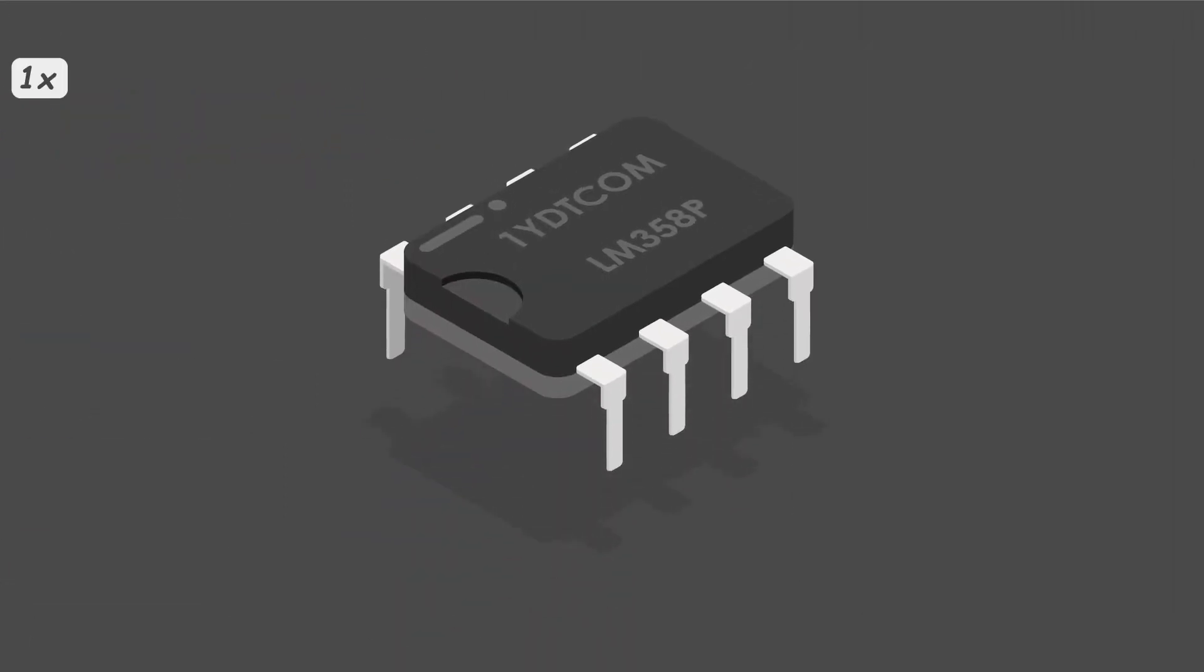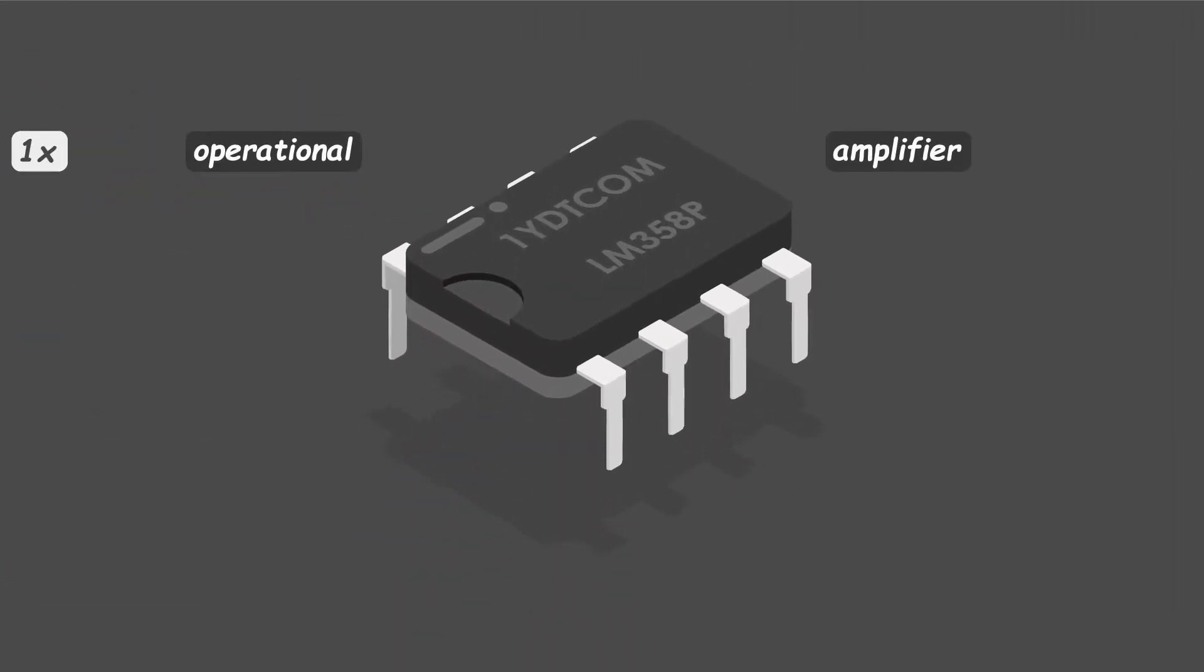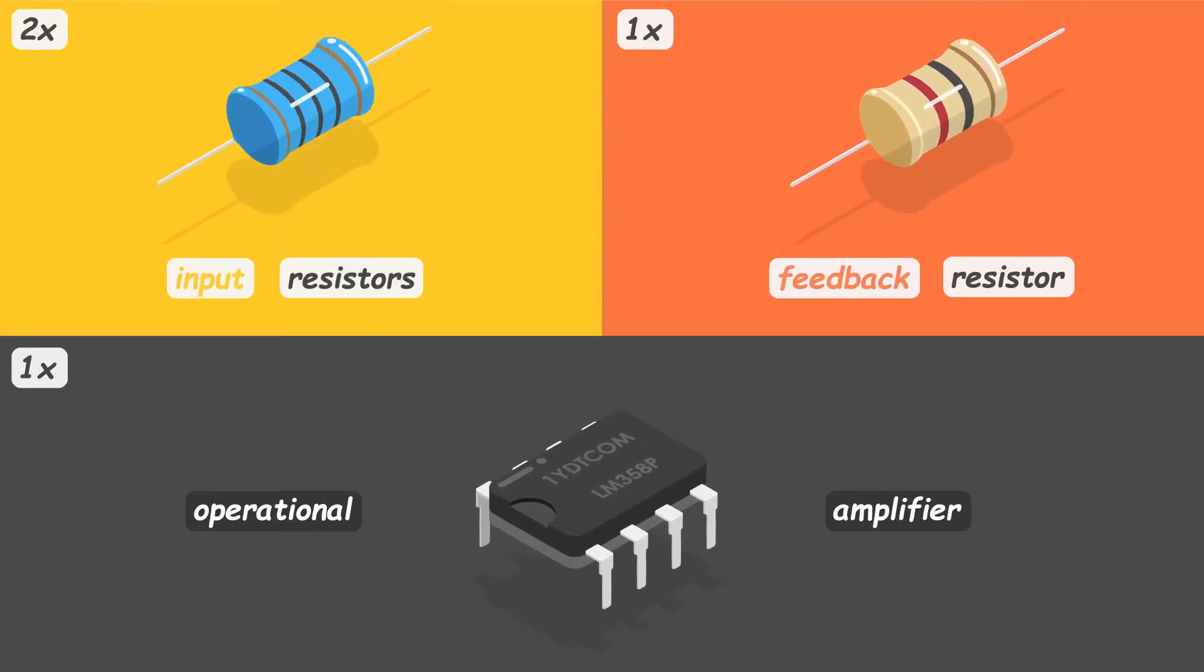For this example, we will need one operational amplifier, one feedback resistor, and two input resistors, because we want to work with two signals.